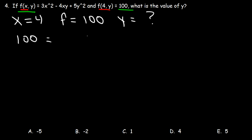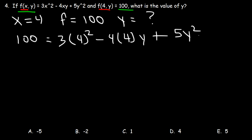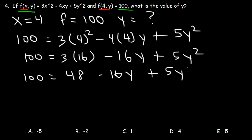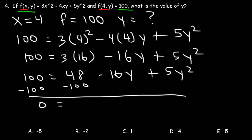So with 3x squared, since x is 4, that's 3 times 4 squared, minus 4 times 4 times y, plus 5y squared. 4 squared is 16, and 4 times 4 is 16. 3 times 16 is 48. And what we have is another quadratic function. Let's subtract both sides by 100. 48 minus 100 is negative 52, so this is what we now have.